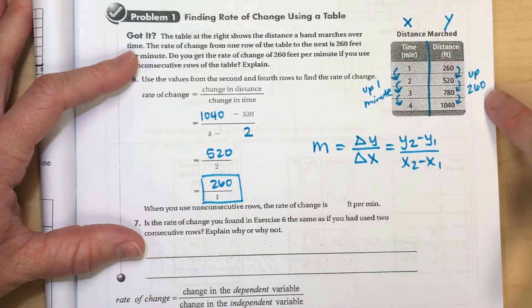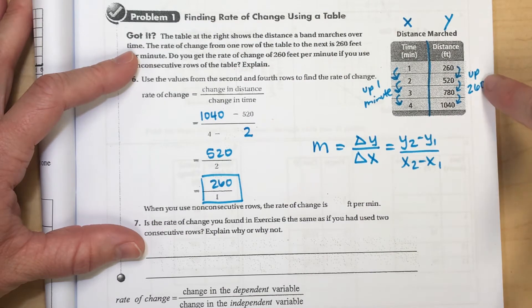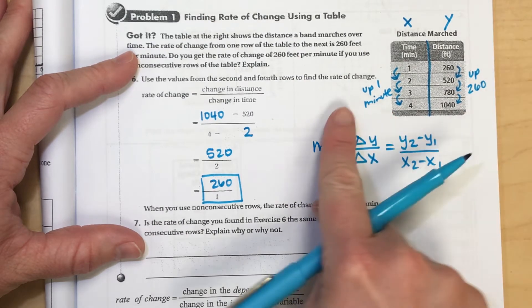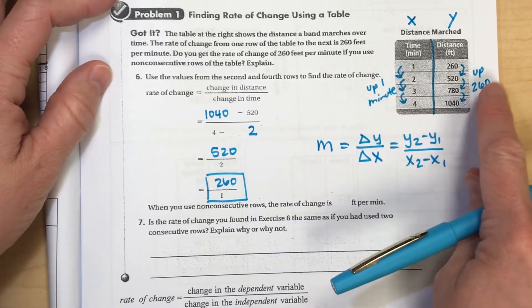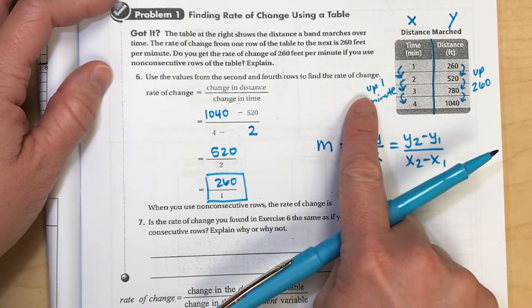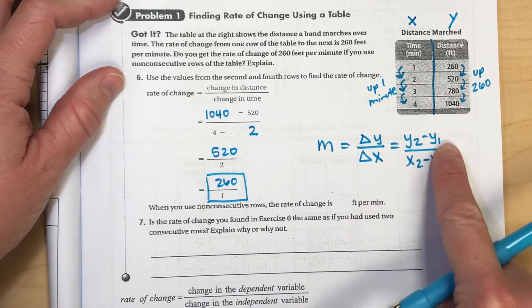Or you can just look at how are my y values changing? It's going up 260 per every one minute. Well, that's your slope. So as long as you're tracking what the change is in your y and the change that you have for your x's, then you can find your slope.